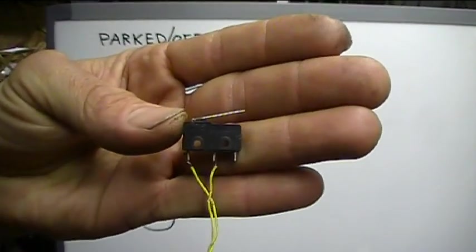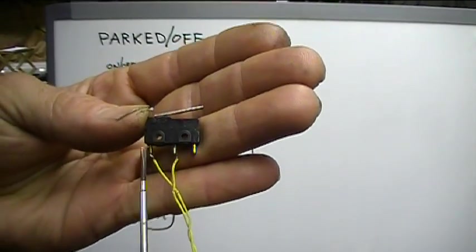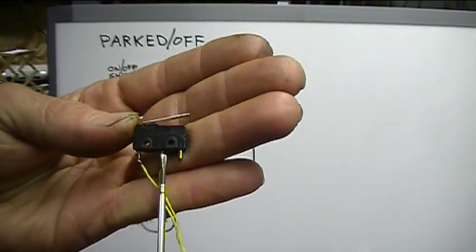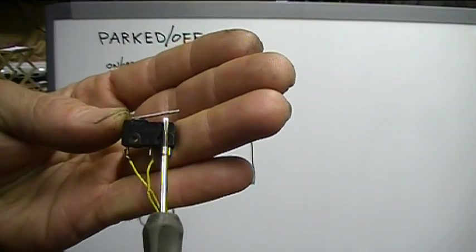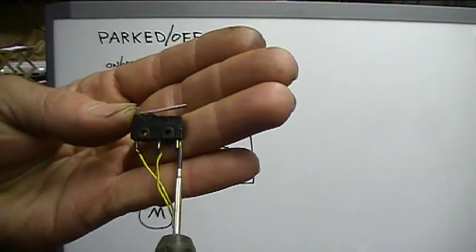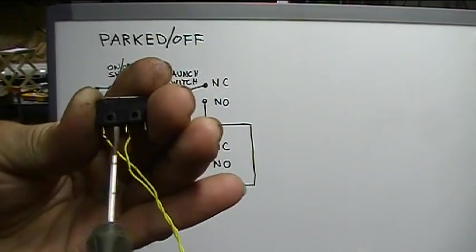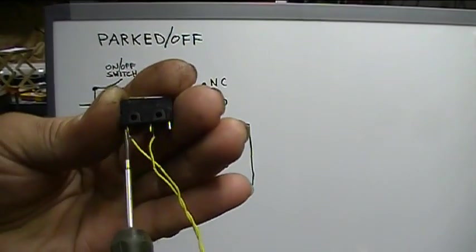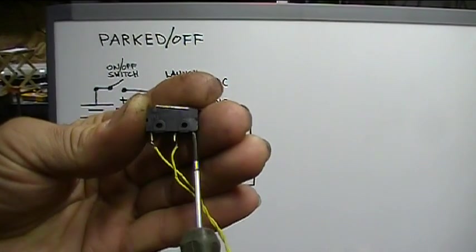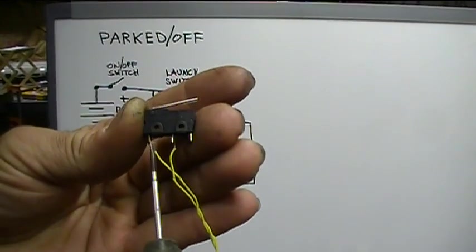Right now, nothing is acting upon the switch. It's in a normal state. This is the common, this is normally closed, this is normally open. There is continuity right now. Current can run through the common and the normally closed, because it's in normal position and it's closed. Between here and here is continuity. Between here and the normally open, there is no continuity. Once the switch is acted upon by something, then these two basically switch function. The common is here. The normally closed now goes open. The normally open now goes closed and has continuity between here and the common.